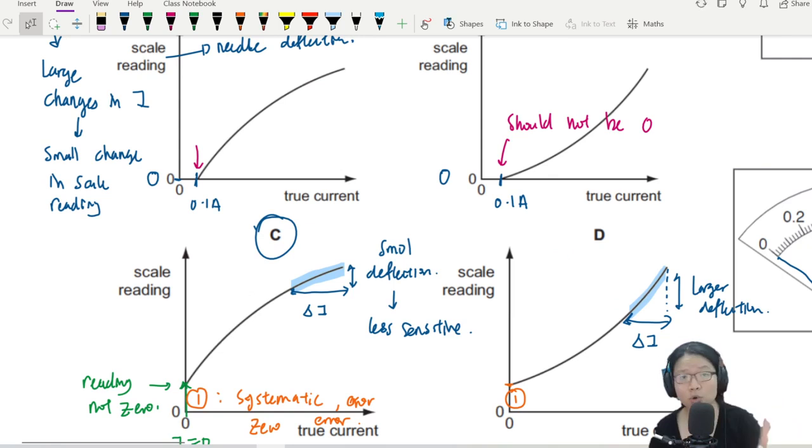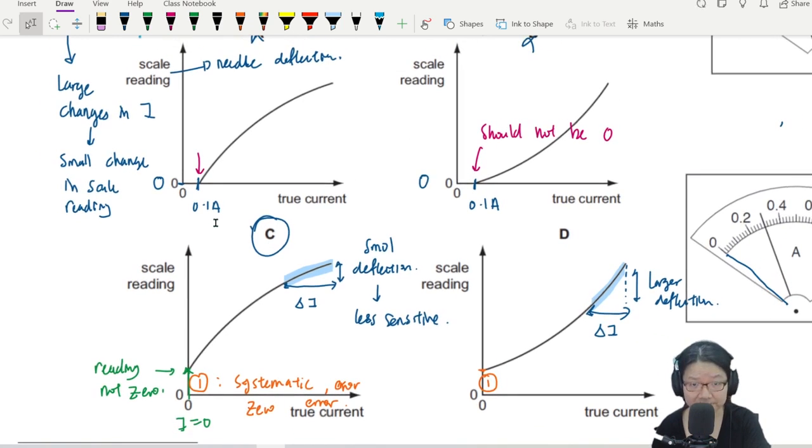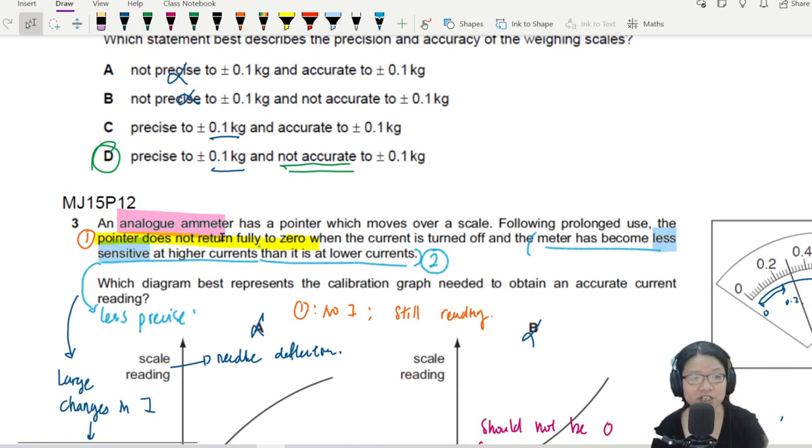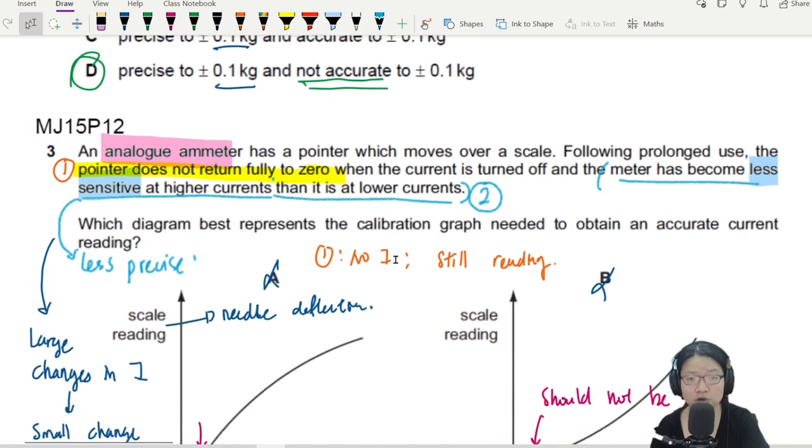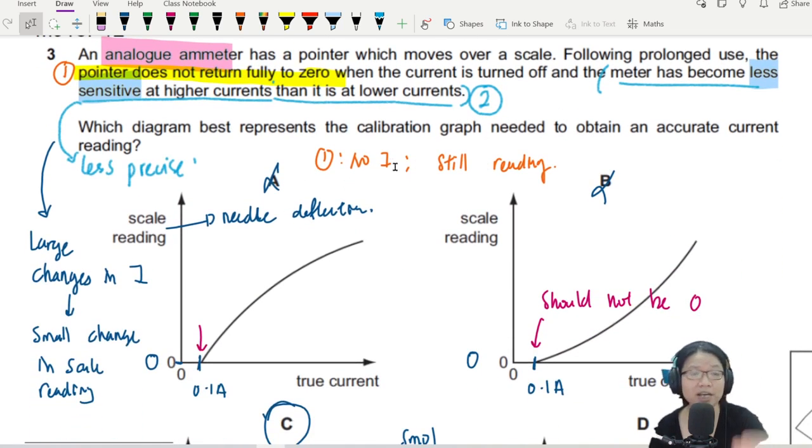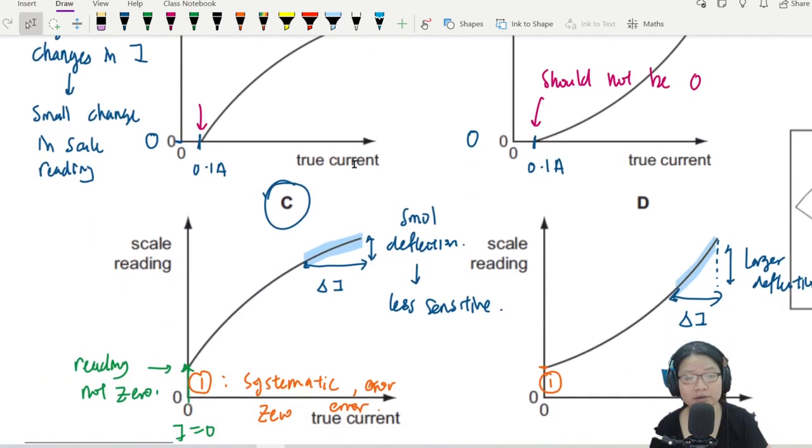News flash. This is MCQ. We can flip the X and Y axis. Can flip anytime. Don't memorize the shape. Learn to analyze the graph. So first step, I outline the issues with the ammeter. There are two issues: pointer doesn't return fully to zero, and meter is less sensitive at high currents. So if pointer doesn't return to zero, means when there's no current, still got reading. Which is option C and D. So when I is zero, there's still reading. The scale reading is not zero for both C and D.